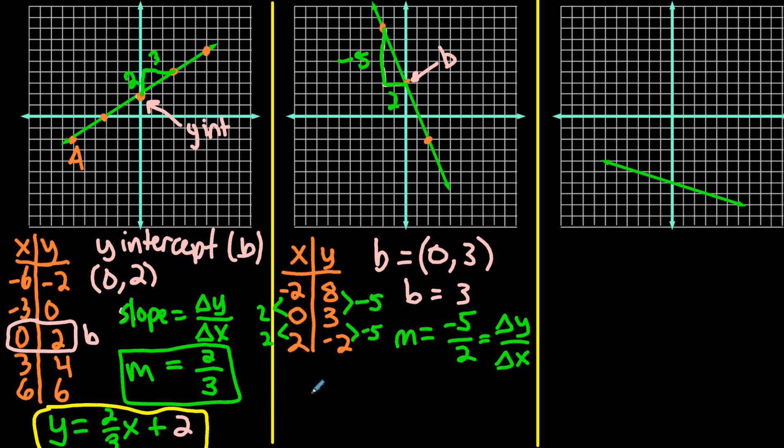So for our equation, remember it's going to be in the form y equals mx plus b. So it would be our slope is negative 5 over 2x plus the y-intercept, which is 3. So that would be our equation, y equals negative 5 over 2x plus 3.